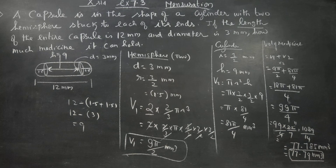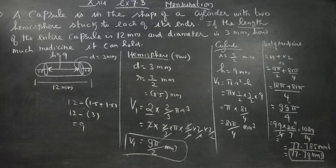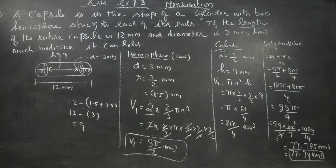The result is 77.785, rounded to three digits, giving approximately 77.79 mm³. The final answer is 77.79 millimeter cube. Thank you.